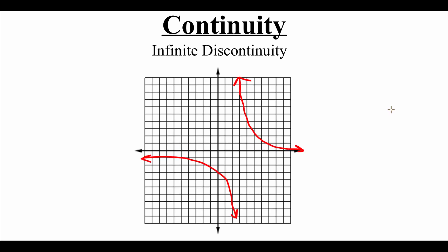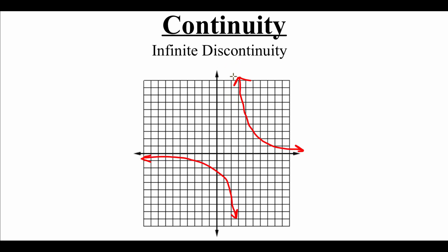Our last type of discontinuity is infinite discontinuity. We can see there's a big break in our graph. The first piece is heading down towards negative infinity, and the other piece is going up towards positive infinity. What's actually happening is there would be a vertical asymptote splitting these two pieces of our graph apart. So our graph is following that asymptote down to negative infinity and up to positive infinity — that's why we have infinite discontinuity.